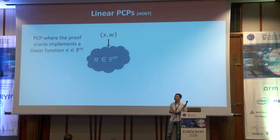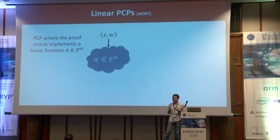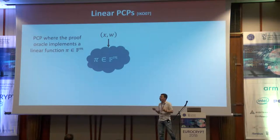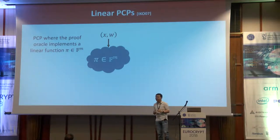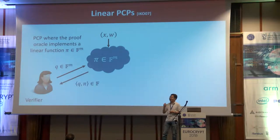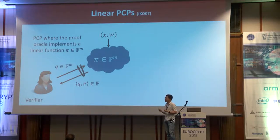Let me remind everyone what a linear PCP is — a notion first formalized and introduced in a work by Ishai et al. In a linear PCP, similar to a standard probabilistically checkable proof, the verifier gets access to a proof oracle. In the traditional PCP model, the verifier queries bits of the proof and then decides. In the linear PCP oracle, the proof can be viewed as a vector implementing a linear function. The verifier submits query vectors to the linear PCP oracle, and the oracle responds with the inner product between the verifier's query vector and the linear PCP proof. The verifier can submit multiple queries, and at the end decides whether to accept or reject.